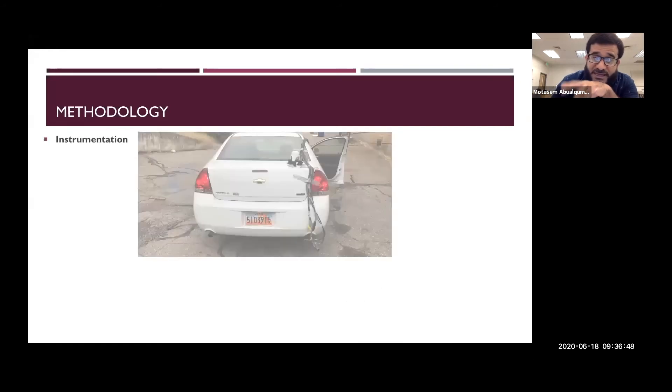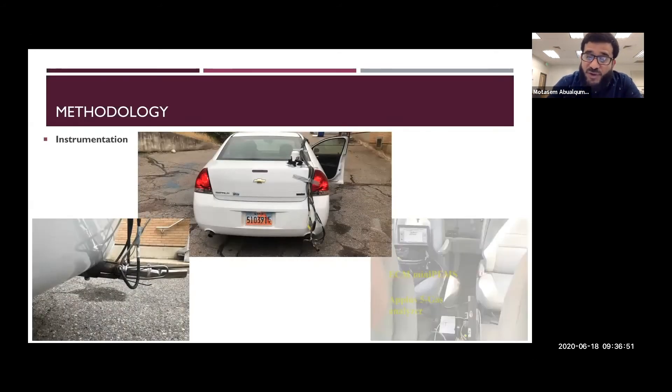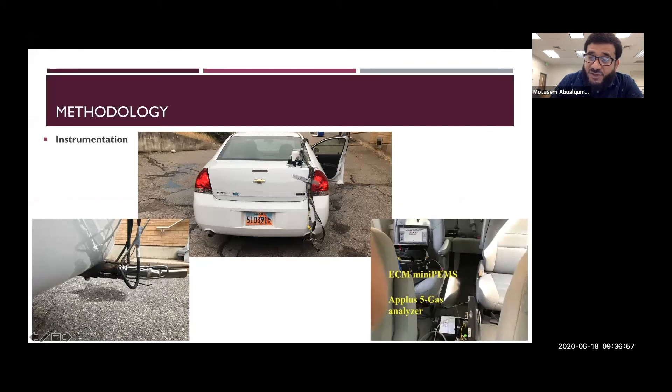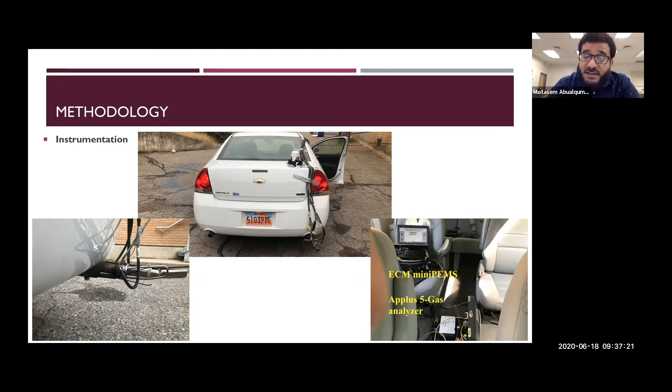The instrumentation we use—we have portable instrumentation where we carry the instrumentation on the vehicle. Here we have two instruments: the ECM mini PEMS and the AP plus five gas analyzer on the vehicle. We have some cables coming out of the window into the sensors in the back and the tailpipe of the vehicles. This is a closer look. We have four cables going inside, beside the temperature thermocouple cables. It's the way of having the instrumentation on your vehicle when you drive it just like a normal drive to have more representation of the real world.